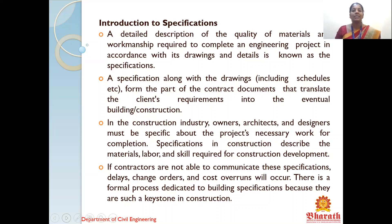In the construction industry, owners, architects, and designers must be specific about the project's necessary work for completion. If anything differs from the specification and the contract, it will cause disputes between architects and designers, so it should be proper and to the point. Specification in construction describes the materials, labor, and skills required for construction development. If contractors are not able to communicate the specification, delays in the construction process will occur. There is a formal process dedicated to building specification because it plays a huge role in construction.